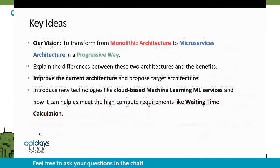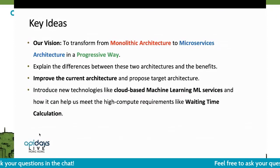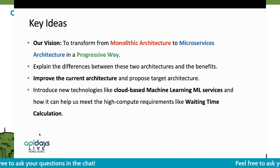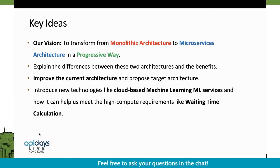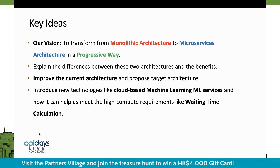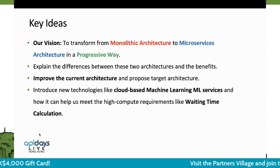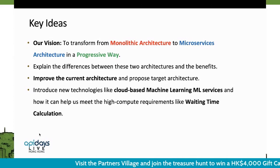We summarized the case into a viewpoint. The vision is to transform from monolithic architecture to microservices architecture in a progressive way, taking minimal risk. We need to explain the difference between the two architectures to management and the reason why we are making this change. We highlight the benefits, improve the current architecture, and propose the target architecture. Lastly, we want to introduce new technologies like cloud-based machine learning services.